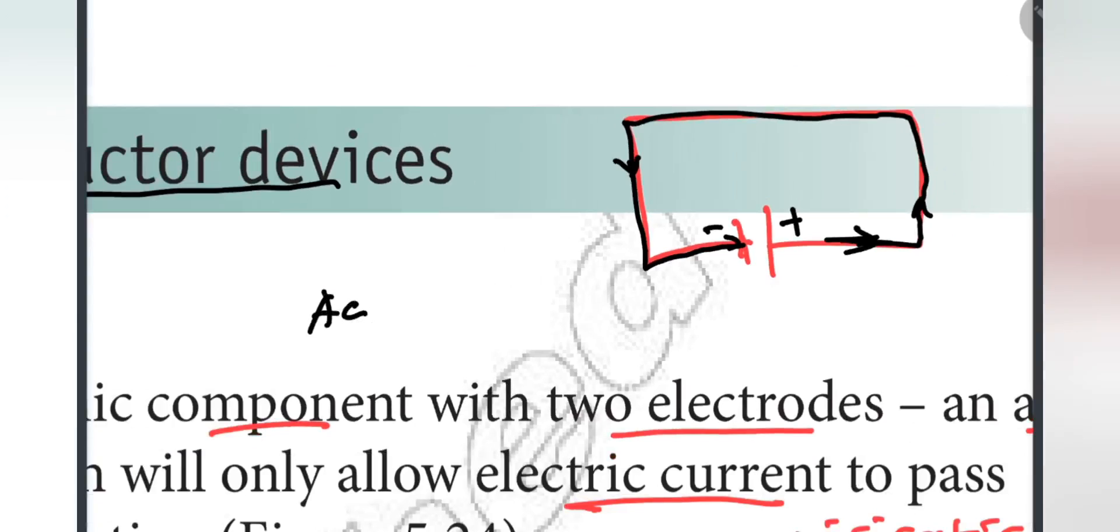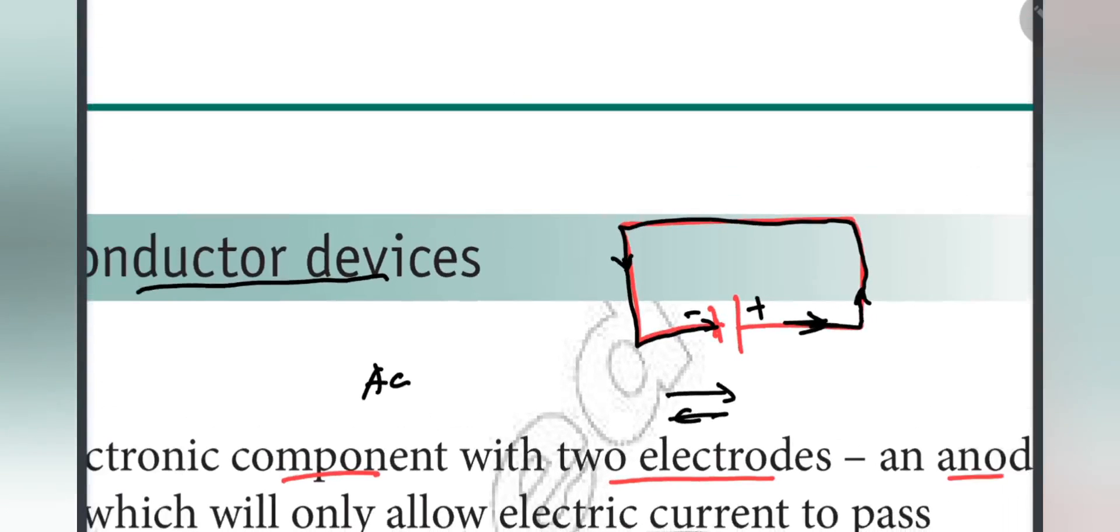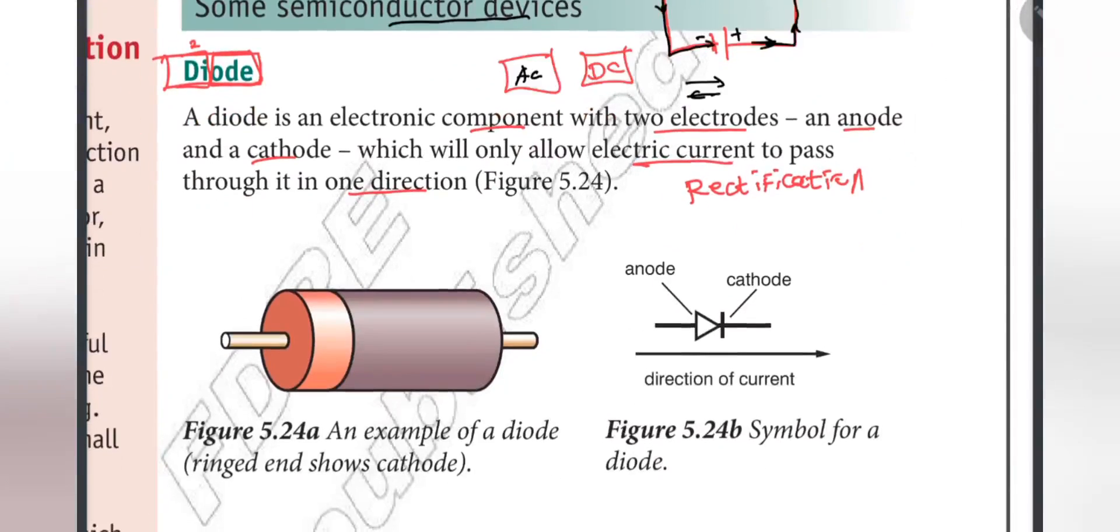Current is going to reverse. We have to get the electric current. Electric current is going to be AC current. Forward, reverse, forward, reverse. AC current is going to be DC. Direct current. Diode is going to be used.